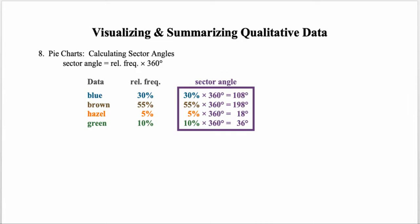The other common graph for visualizing qualitative data is the pie chart. To calculate the sector angle for any piece of the pie, you take the relative frequency and multiply by 360 degrees. For example, individuals with blue eyes would be represented by a piece of the pie with an angle of 108 degrees.